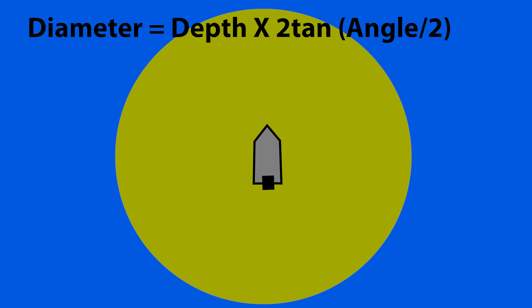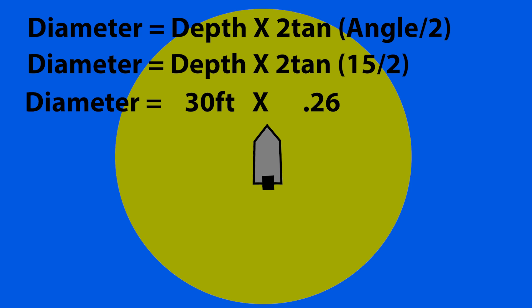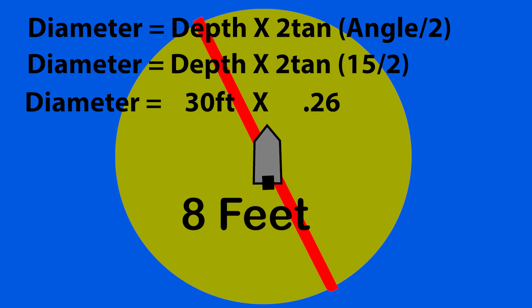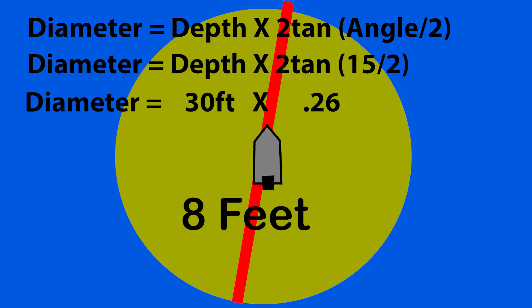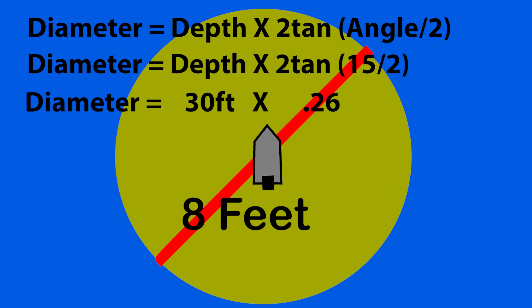Now let's run the same formula using the 15 degree cone angle produced by the 200k hertz frequency sonar. Using the same 30 feet of depth in this example, we find the total cone diameter is only 8 feet at 30 feet of water. This means the cone extends about 4 feet in all directions around the boat at 30 feet of water.